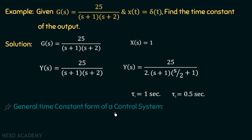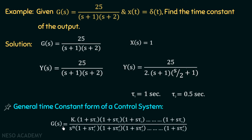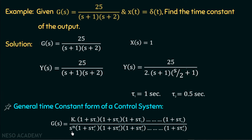Now we will move on to the general time constant form of a control system. The general time constant form is defined as G(S) equal to K, multiplied with (1 + s·τ1)(1 + s·τ2)(1 + s·τ3)... in the numerator, over s^n multiplied with (1 + s·τa)(1 + s·τb)(1 + s·τc)... in the denominator. This transfer function represents n number of zeros, n number of poles at the origin, and n number of poles in the left half plane. We will use this general time constant form in the upcoming sections.